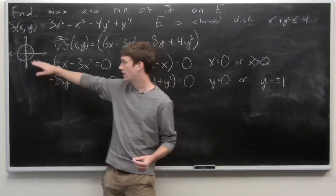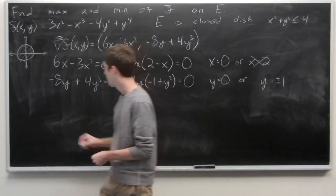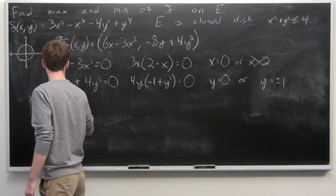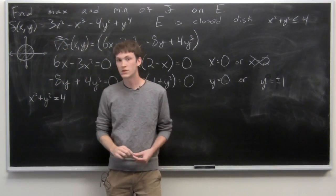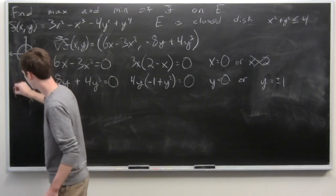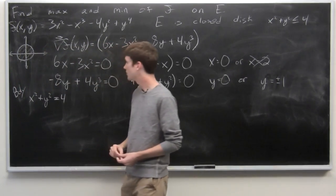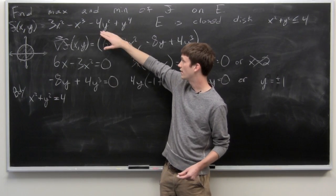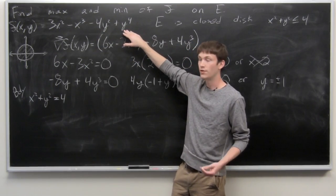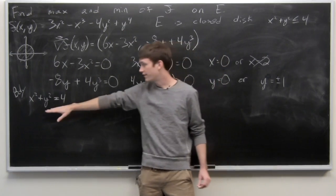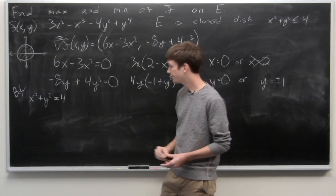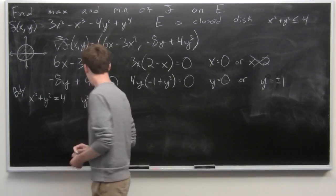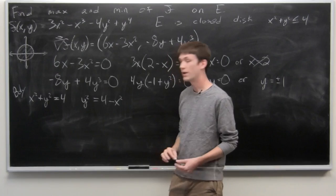Now we look at the boundary, which is just the circle x² + y² = 4. We can solve for y² since our function f(x,y) contains y² and y⁴. Solving for y² is probably the easiest way forward, giving us y² = 4 − x².